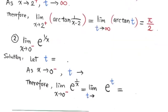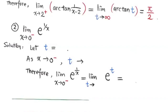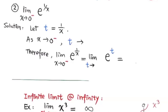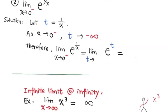In the second example, as x approaches 0 from the left, the outer function is e to the power of 1/x and the inner function is 1/x. We let t = 1/x. When x approaches 0 from the left, 1/x goes to negative infinity. So t goes to negative infinity as x approaches 0 from the left.